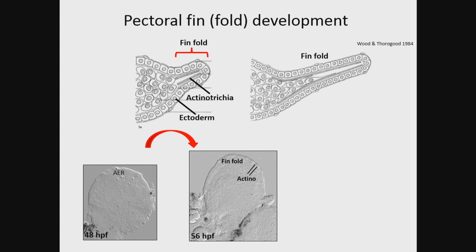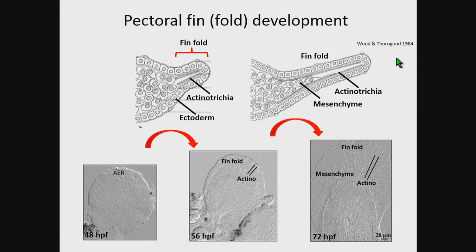The next step involves the extension of the fin fold. It is still supported by these actinotrichia fibrils, and now we have a population of mesenchymal cells that will migrate distally through the fold. By three days or 72 hours post-fertilization, we have a pectoral fin consisting of the fin fold made up of ectoderm, supported by actinotrichia fibrils, and a population of mesenchymal cells that are migrating distally.